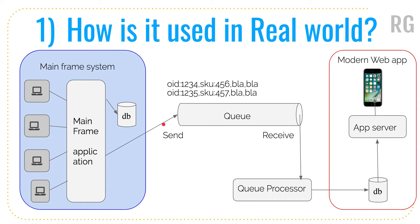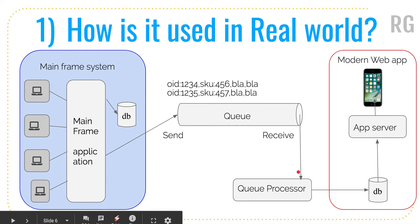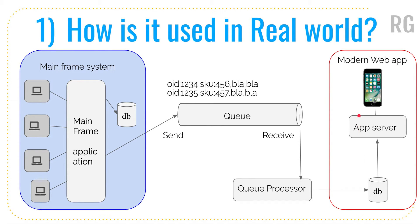The messaging queue is a software application sitting in between, receiving all the information from the mainframe system in a queue. For example, you might see messages like order ID 123, SKU 456, and so on — each could be one message in the queue. On the receiving end, a queue processor takes the messages, processes them, and puts the data into a database. An app server can then process that data and display it in a report.